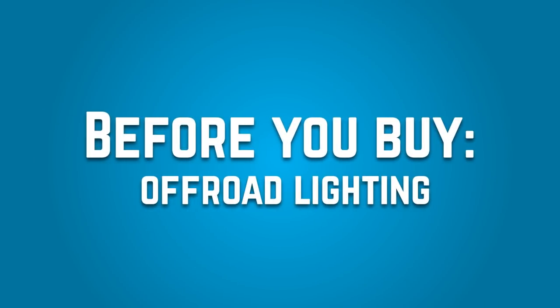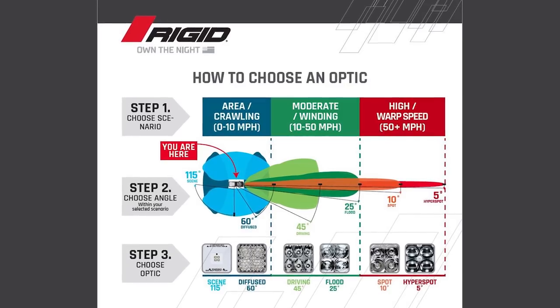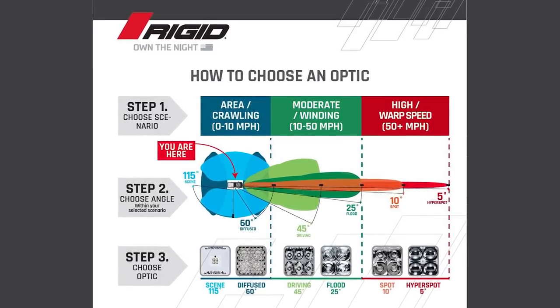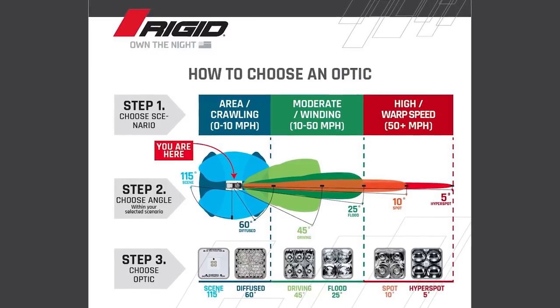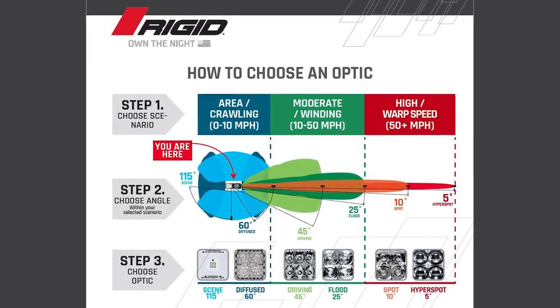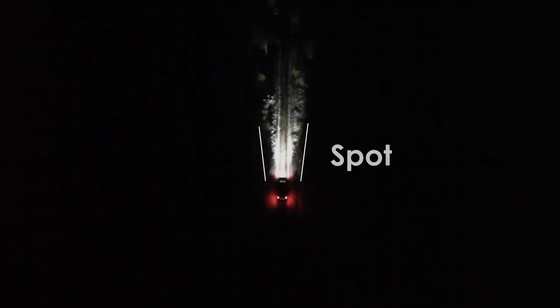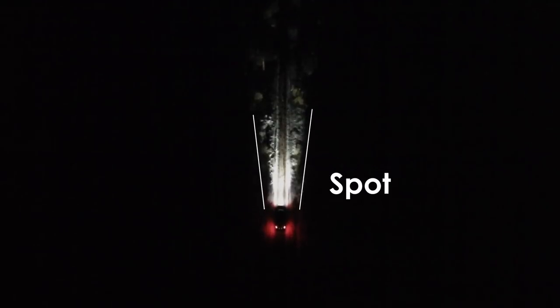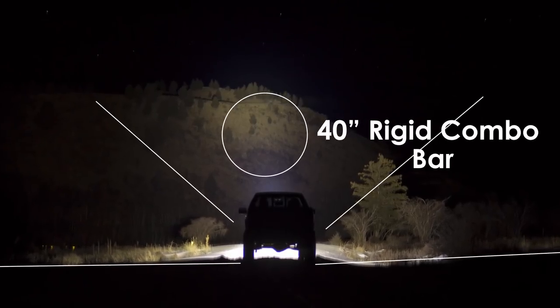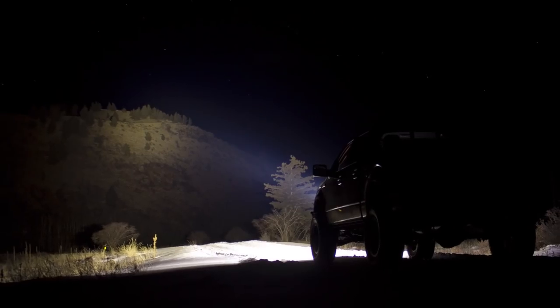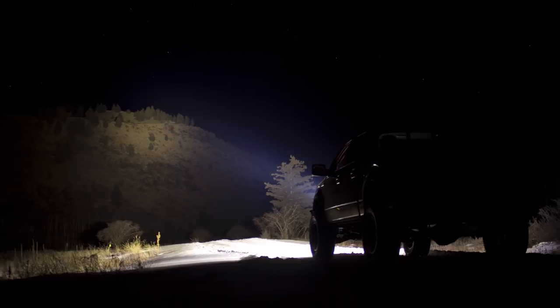Nearly every off-road light brand has a multitude of different light types, and within those types are a ton of different beam patterns to choose from. The overwhelming number of options can make it tough to find the right off-road lights for your application, which is why we put together this very general breakdown to help you find the right beam pattern for the vehicle of choice.